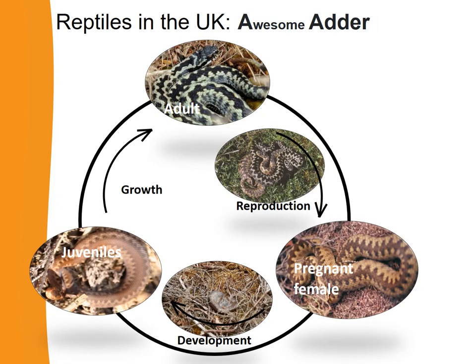Next, let's look at the life cycle of the adder. The adults reproduce in the springtime. Then the female — the pregnant female — is an ovoviviparous animal. So the pregnant female has eggs inside her, and the young are developing inside those eggs. At some point the young hatch inside those eggs and then leave the body of the female — she gives birth to them. You can see a picture of a newly born adder. Those young juveniles develop and grow into the adults.